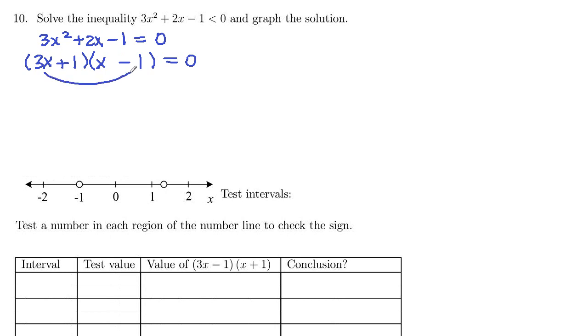So that would give positive 3x, I'm sorry, negative 3x and positive x would be negative 2x. We've got positive 2x, so we want to switch those signs. This one should be positive and this one should be negative.